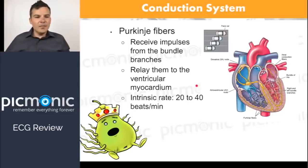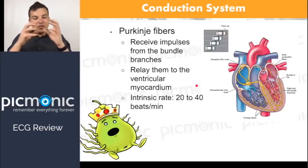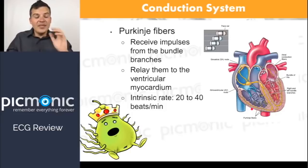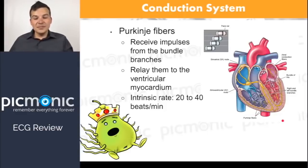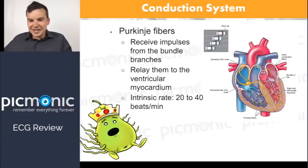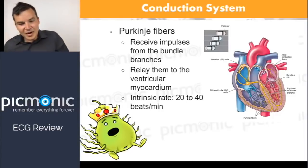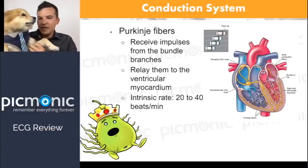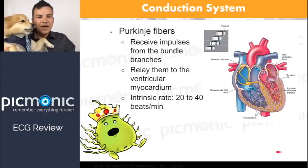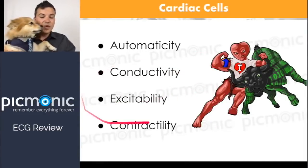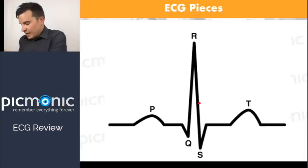The last part is the Purkinje fibers. Down from the AV node, the Purkinje fibers go out through the ventricles. The Purkinje fibers are the true backup system, coming in at an intrinsic rate of 20 to 40. Cardiac cells themselves are automatic — they can conduct themselves, they excite themselves, and they are contractile. Now let's talk about ECGs themselves.